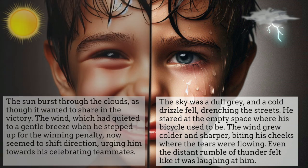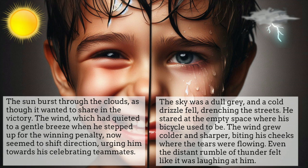In the first paragraph, I've chosen warm and sunny weather to match the mood of the main character, who has just scored the winning penalty. In the second paragraph, I've chosen dark and gloomy weather to match the mood of the boy, who is upset because his bicycle has been stolen.